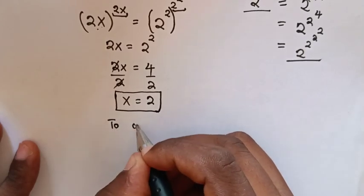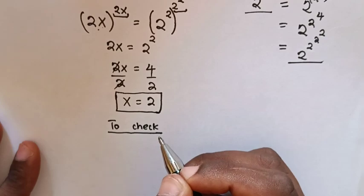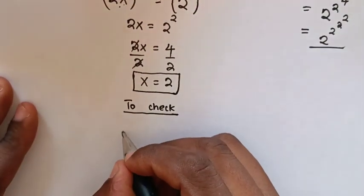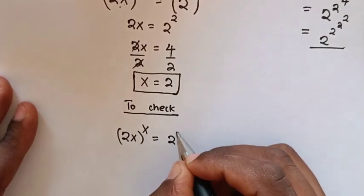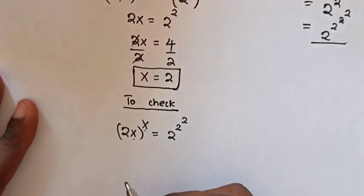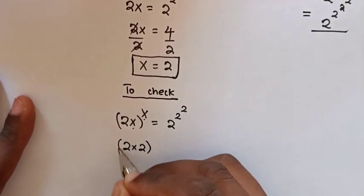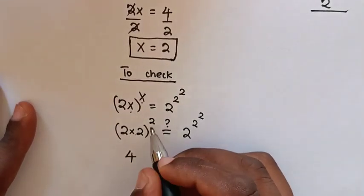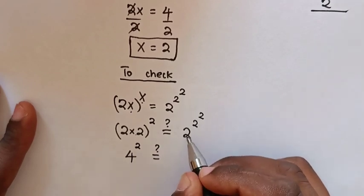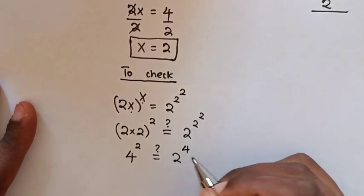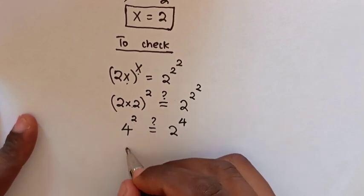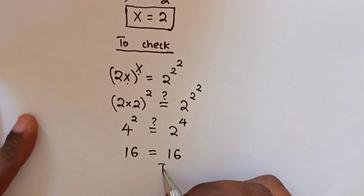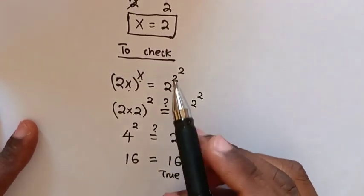Now to check if our answer is correct, from our problem which is 2x bracket power of x is equal to 2 power of 2 power of 2, we substitute the value of x which is 2, so it will be 2 times 2 bracket power of 2, if it equals to 2 power of 2 power of 2. This is 4 power of 2, if it equals to 2 and the power 2 power of 2 is power of 4. So 4 power of 2 is 16, which is equal to 2 power of 4 is 16. So it's true — the right side and left side are equal, so it's correct that the value of x is 2.